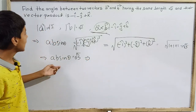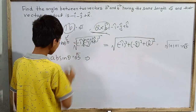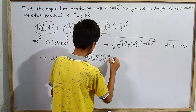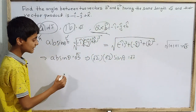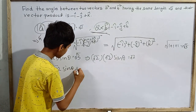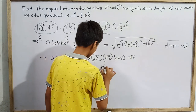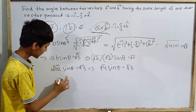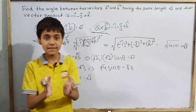I know the magnitude of vector a is √2 and the magnitude of vector b is √2. So √2 × √2 × sin θ = √3, which means (√2)² × sin θ = √3, giving us 4 × sin θ... that is, 2 sin θ = √3.